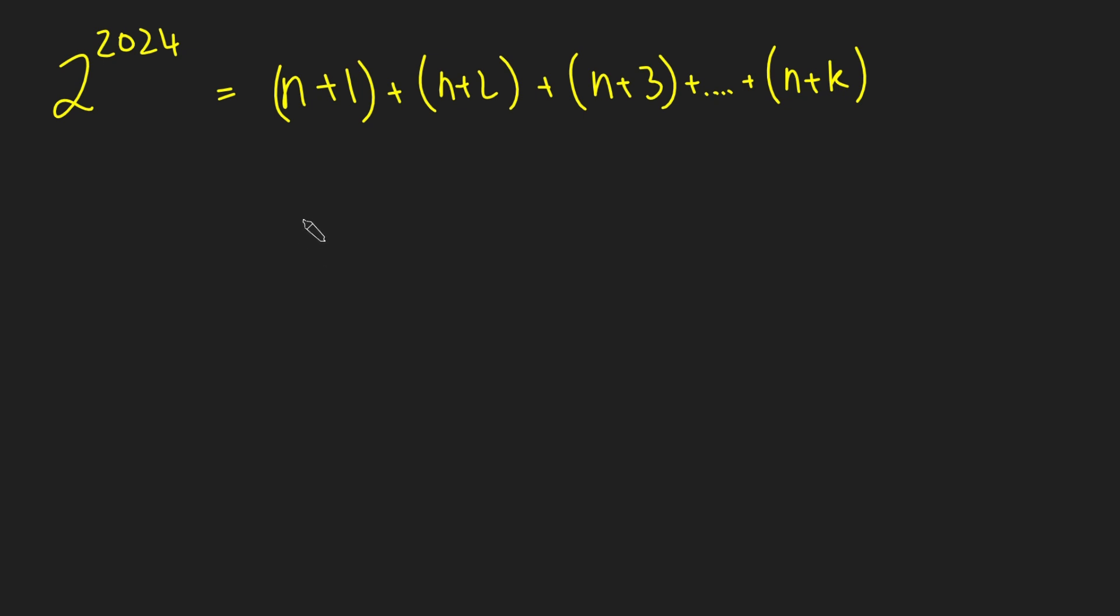Hi, thanks for joining me today, and we're going to try this quick number problem. We want to know, is it possible to write 2 to the power of 2024 as the sum of a bunch of positive consecutive integers? So if you want to have a go at this problem, pause the video now and give it a go for yourself, but I'm going to dive straight into a solution here.